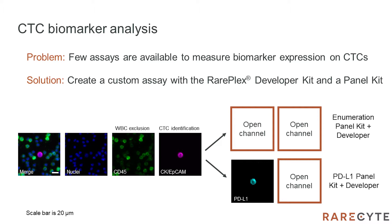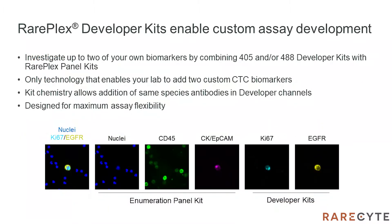Our solution is to allow for the creation of custom assays with up to two biomarkers of interest by combining the developer kit with either an enumeration panel kit or a biomarker panel kit. This system enables the investigation of your own biomarkers of interest using the 405 or 488, or both, developer kits with a compatible RarePlex panel kit. This is the only available technology that allows adding two custom biomarkers and is designed to provide maximum flexibility for your needs, including the use of two antibodies of the same species in the developer channels.